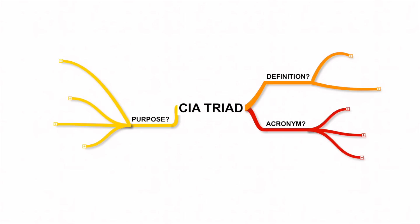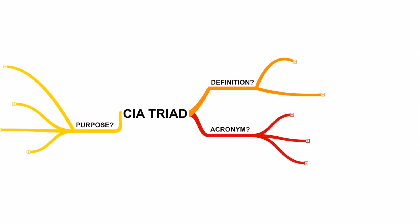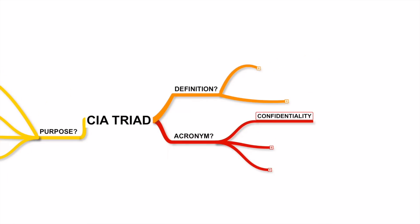This video explains the concept of the CIA Triad, a concept used in the IT industry. We will cover what it is and the purpose it serves in IT. CIA Triad is an acronym — it stands for Confidentiality, Integrity, and Availability. These three simple words encompass a huge chunk of all activities performed in IT.